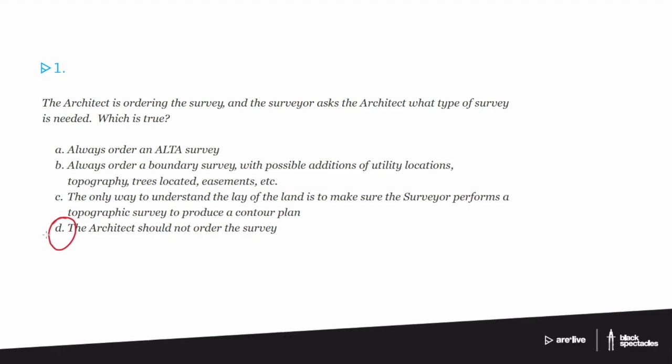And the reason that the answer is D, the architect should not order the survey, is that there's a whole series of things that the architect does at the beginning phases of a project. So remember, this exam is about the early programming, schematic, conceptualization stages of the project, so this is at that beginning point as things are just sort of coming together. The survey is an important part of that.